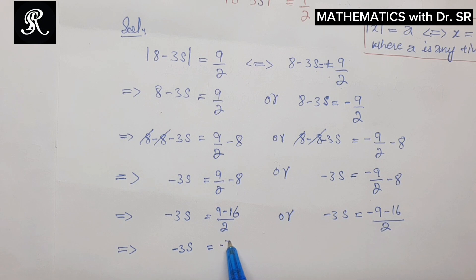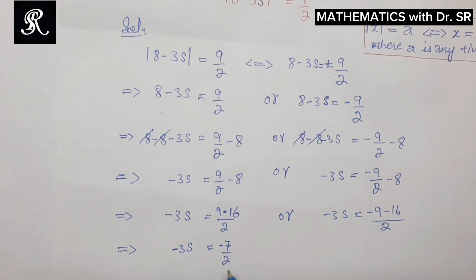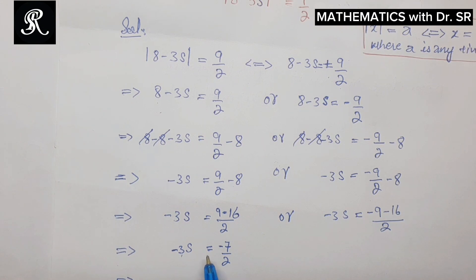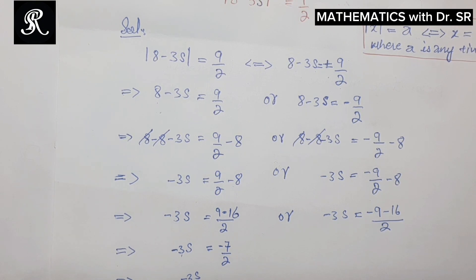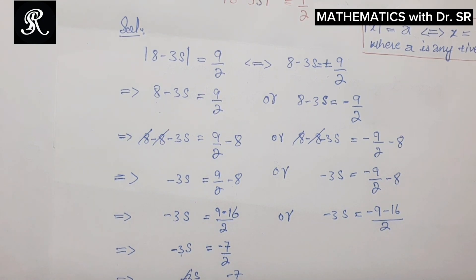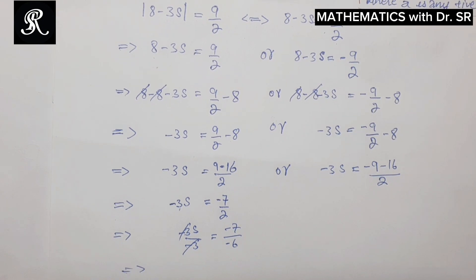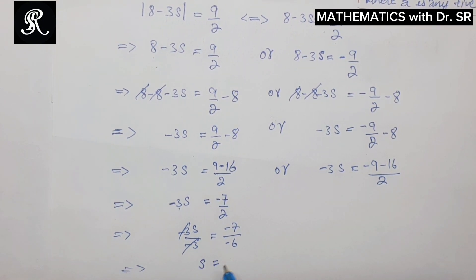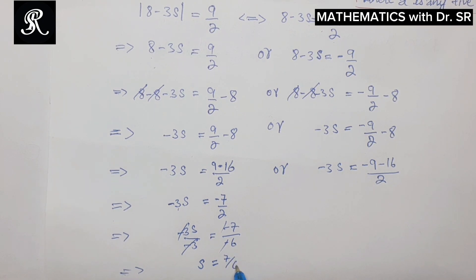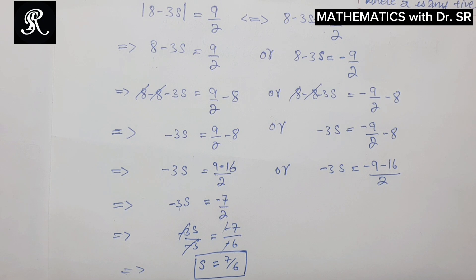For the first equation, 9 minus 16 gives us negative 7, because of the negative sign with the greater number. So we have negative 3s equals negative 7/2. We then divide throughout by negative 3 — the negatives cancel — and we are left with s equals 7/6. This is the first solution.